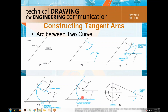Once you get this arc, you are going to darken the arc and then extend the lines all the way to any point you want. This is an example of how we are going to fillet this acute angle.